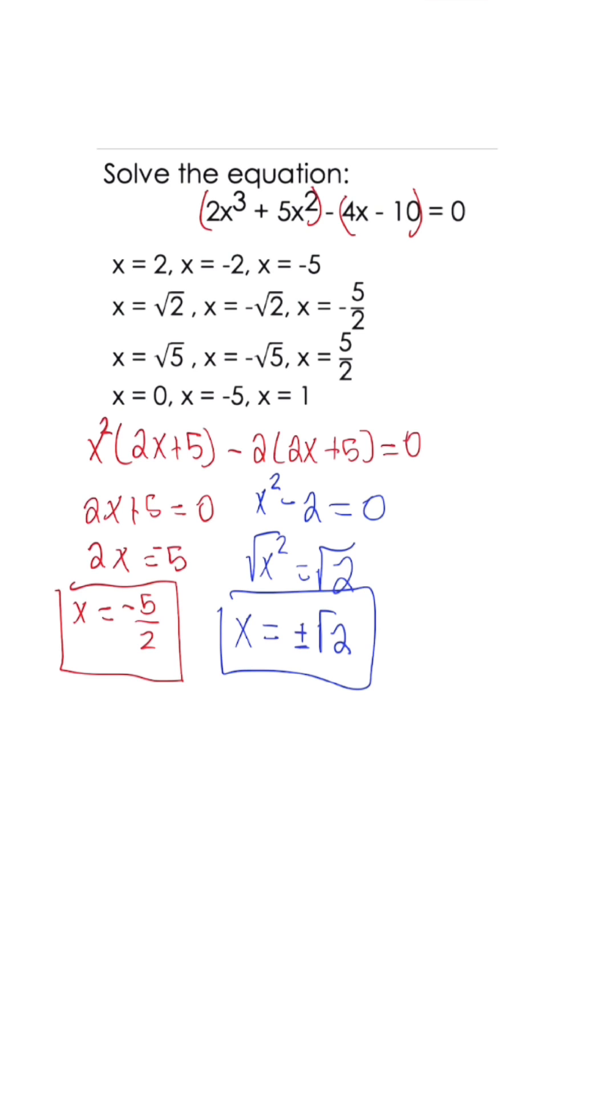When we look at our answer choice, it's going to be our second answer choice of positive radical 2, negative radical 2, and x equals negative 5 over 2.